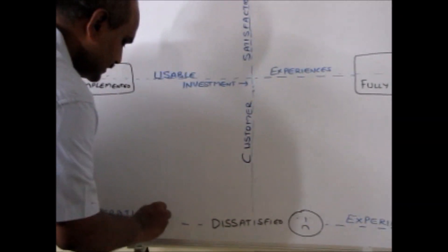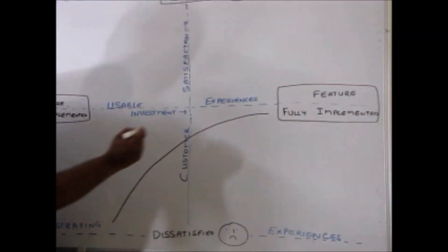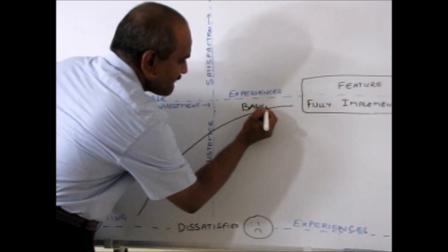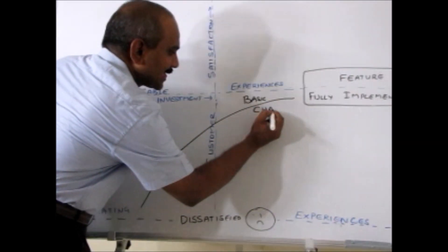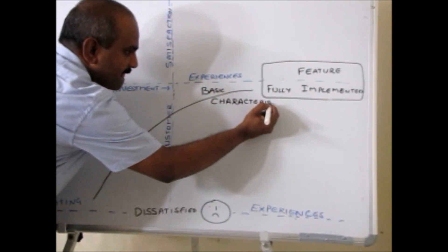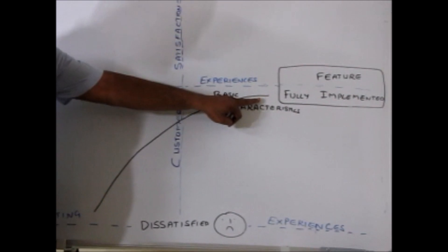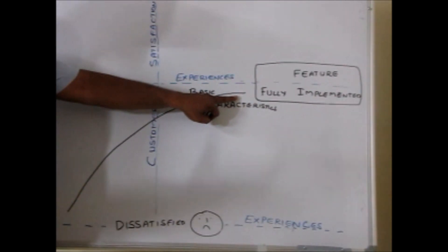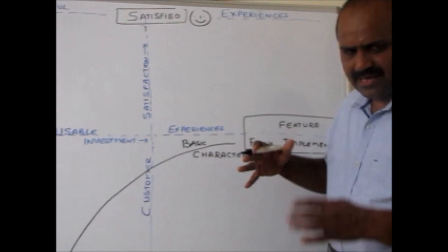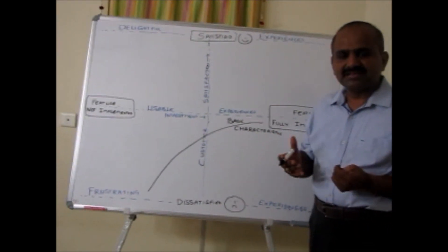The first thing is the basic characteristics. It means if these features are available, customer expects this as basic. The customer expects it's something that is supposed to be there.